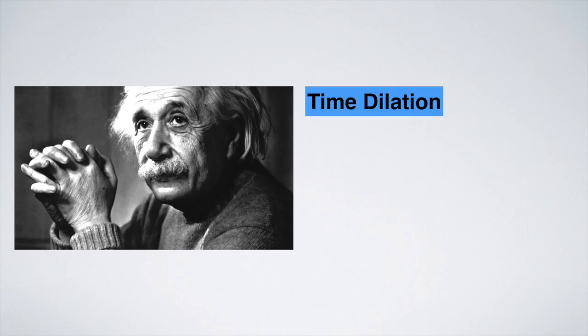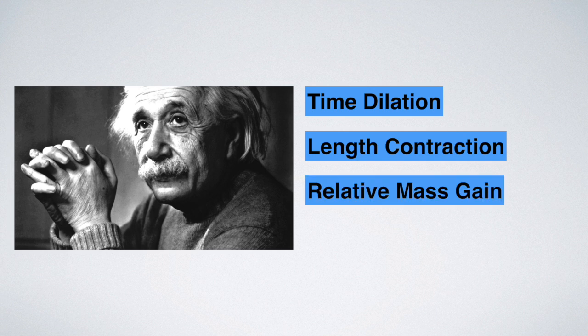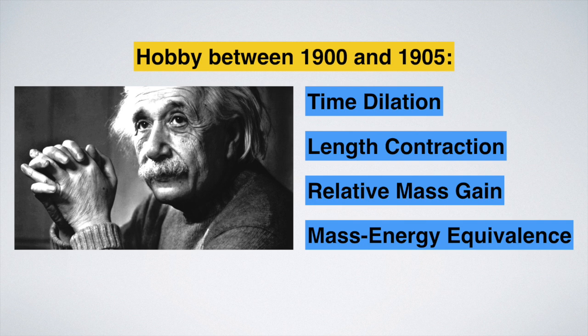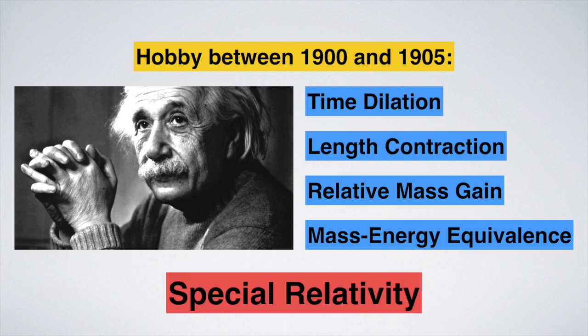Einstein figured out time dilation, length contraction, relative mass gain and mass energy equivalence within the course of a few years. These four effects are what is now known as special relativity.